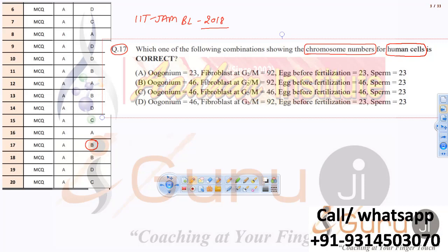For the sperm, we are certain it is 23, because in the human system the 2N condition equals 46, so the sperm is haploid — that is 23. For the oogonium, it is the starting point of oogenesis, so that particular answer option can be cancelled. The confusion lies in the remaining three choices.